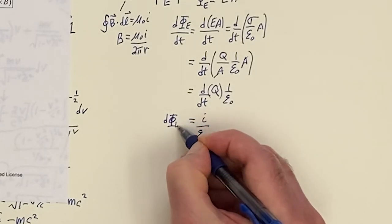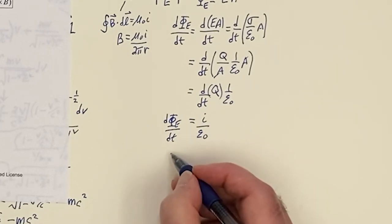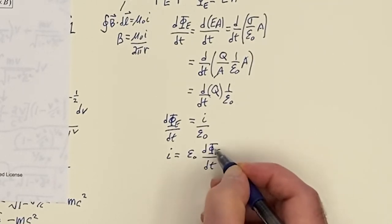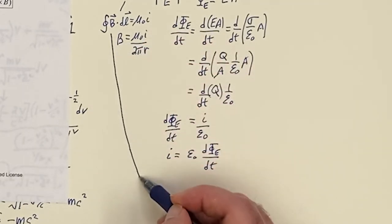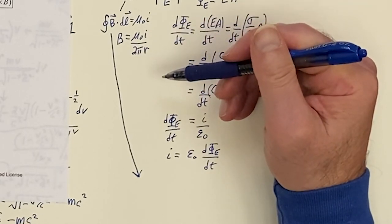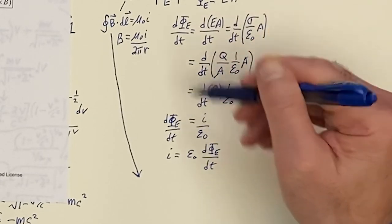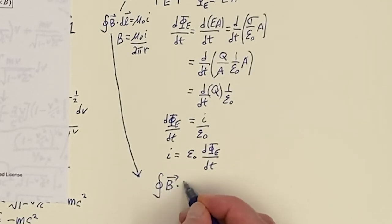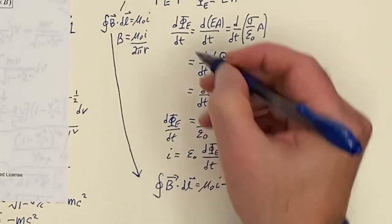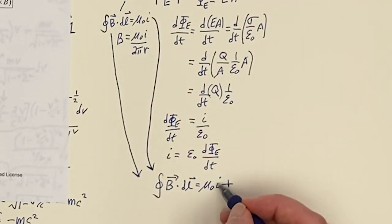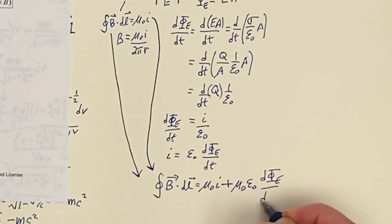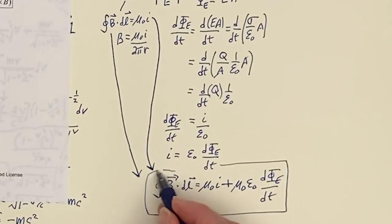There's a change in flux — what inspired Maxwell was seeing this effective current from the change in electric flux. So Ampere's Law should really add that term. To be complete, we add mu naught times the displacement current: B dot dL equals mu naught I plus mu naught epsilon naught times the change in electric flux with time. That gives the last Maxwell equation.